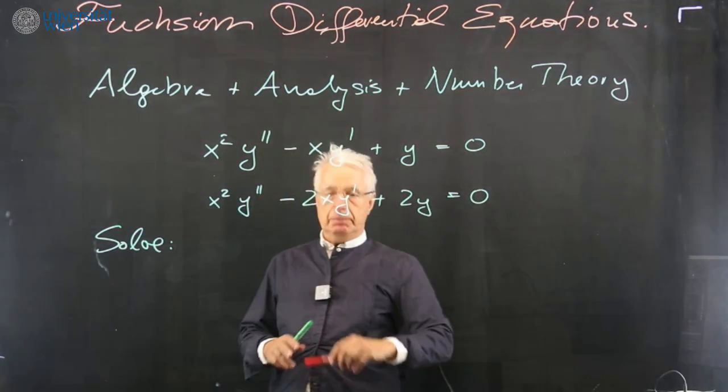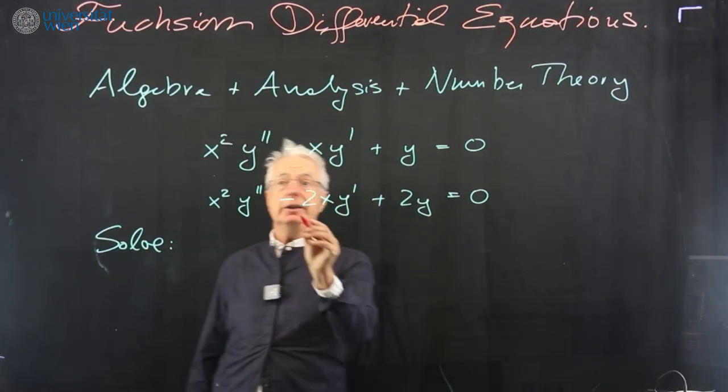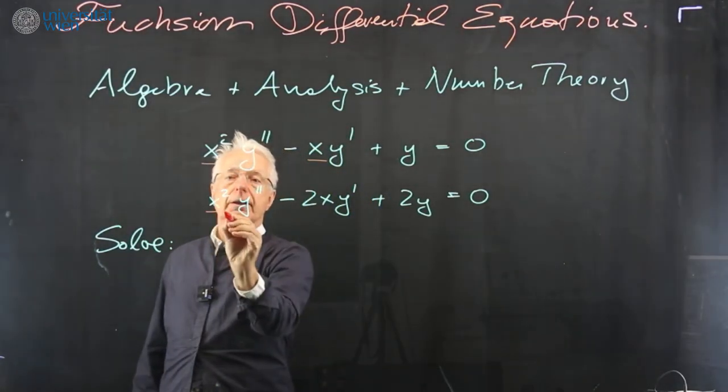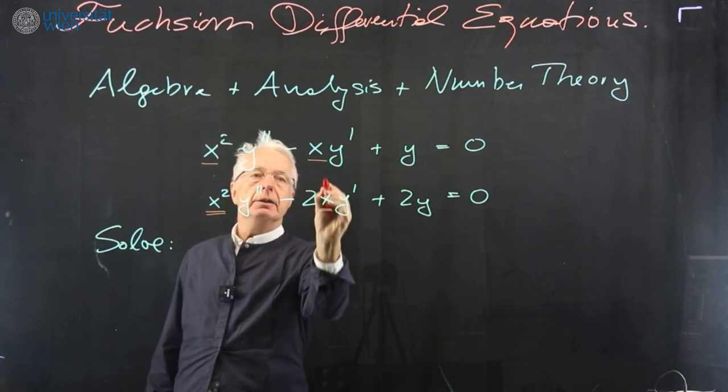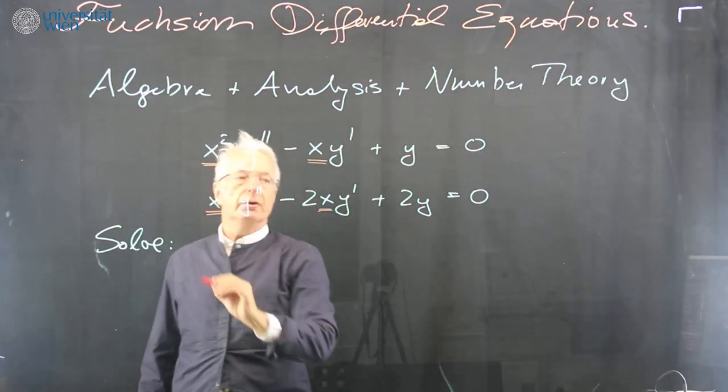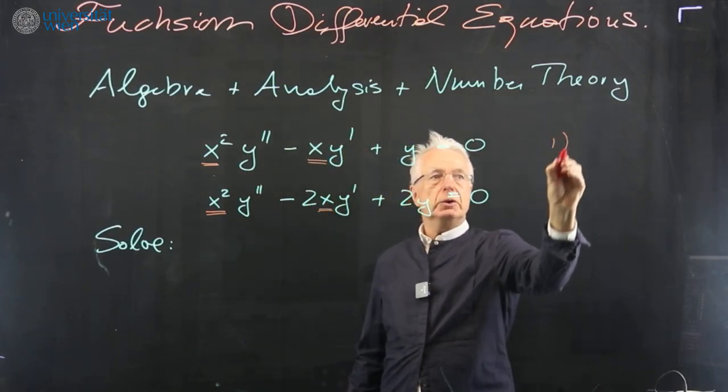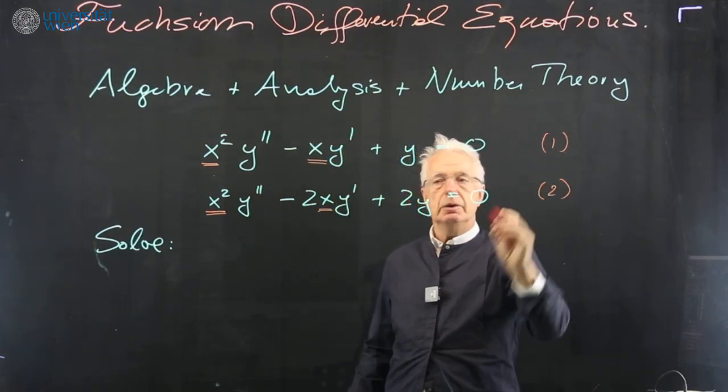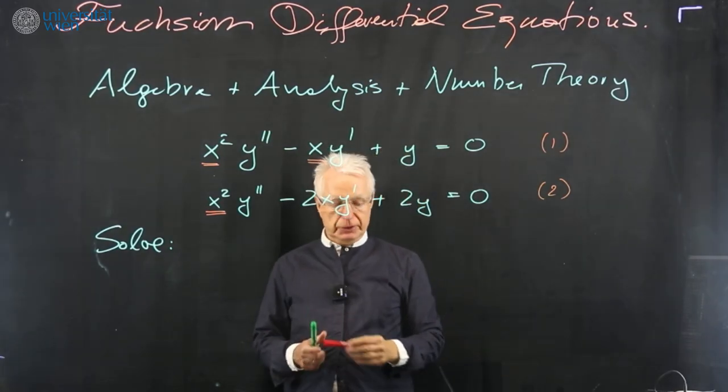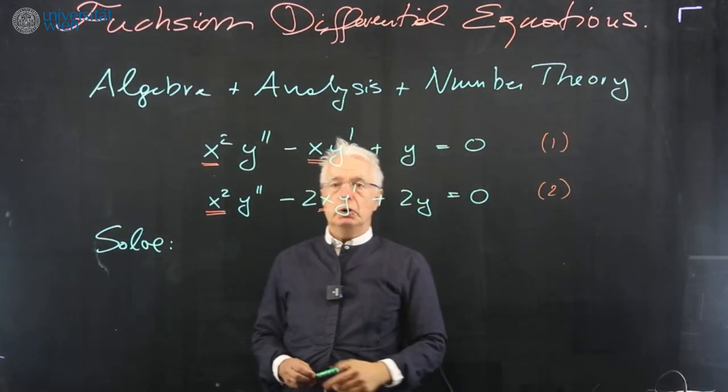And the interesting part in this theory is that the coefficients, they depend on our variables. So we have, let me call this equation 1, equation 2. We have linear differential equations. Here we have polynomial coefficients.